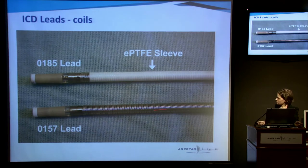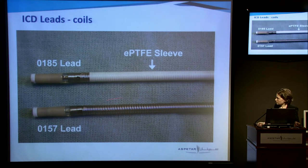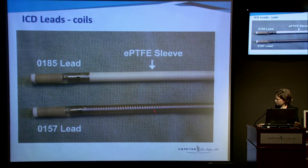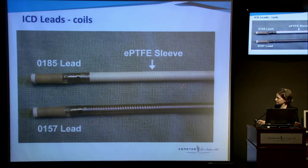One of the problems with the coil is that when it's been implanted in the heart for more than six months, the endocardium starts to grow over the lead and can invaginate into the coil itself. This is a big problem if we have to extract the lead — it makes extraction very difficult. One thing manufacturers have started to do is coat the coils completely in Gore-Tex to try to make them easier to extract.